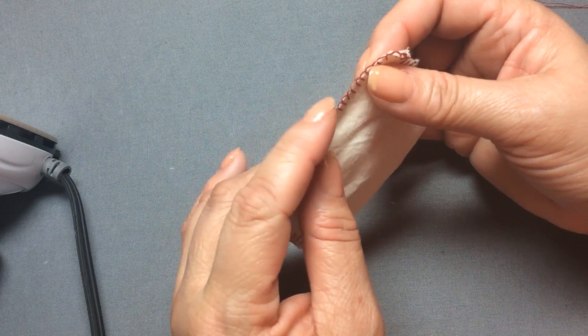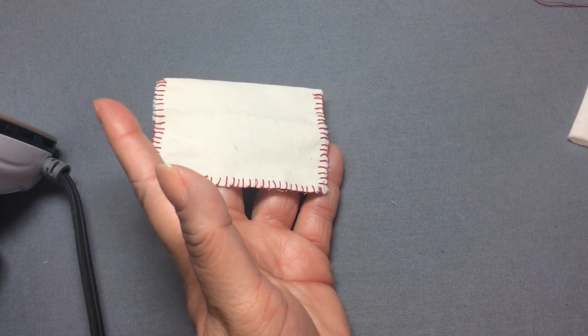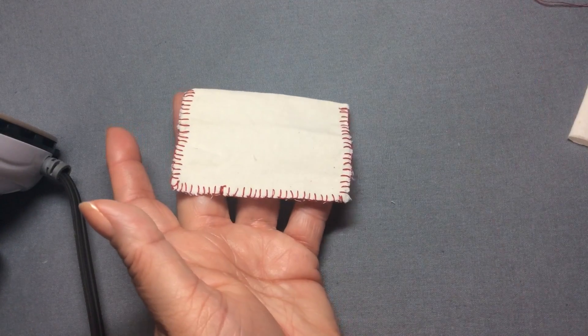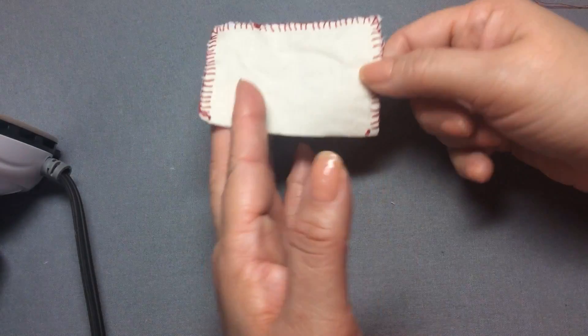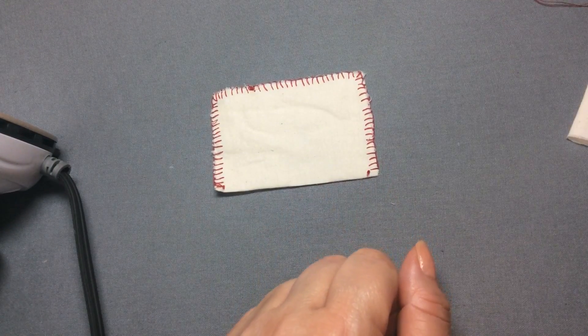That would help protect it. And there we go—a blanket stitch. Sometimes this is used to sew track hair onto wigs. They often use the blanket stitch to attach the wefts of hair. Okay, that's it.